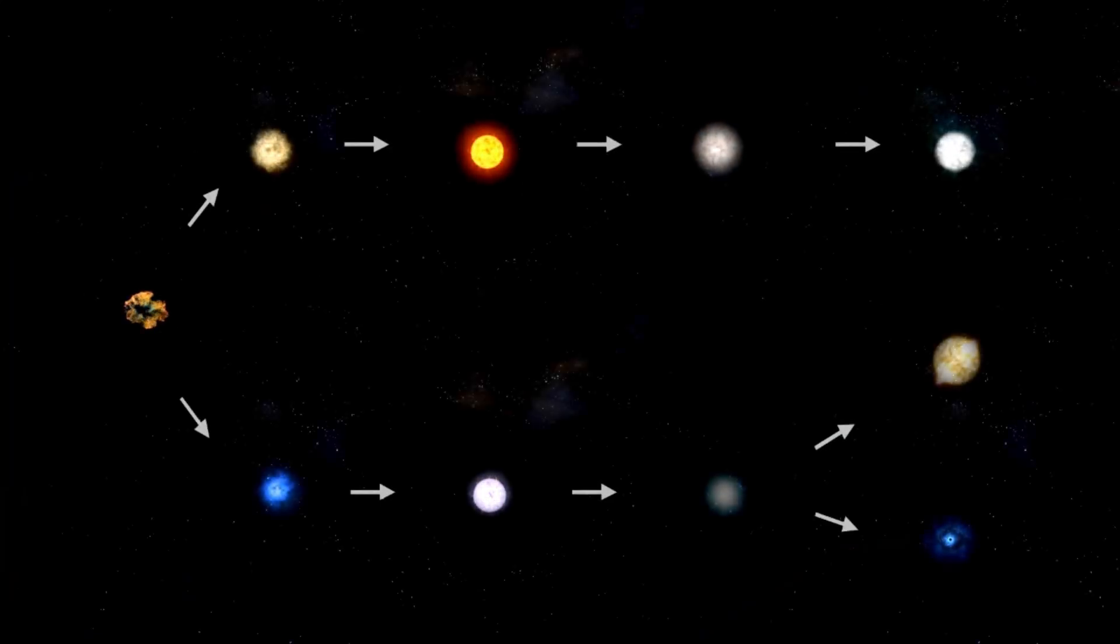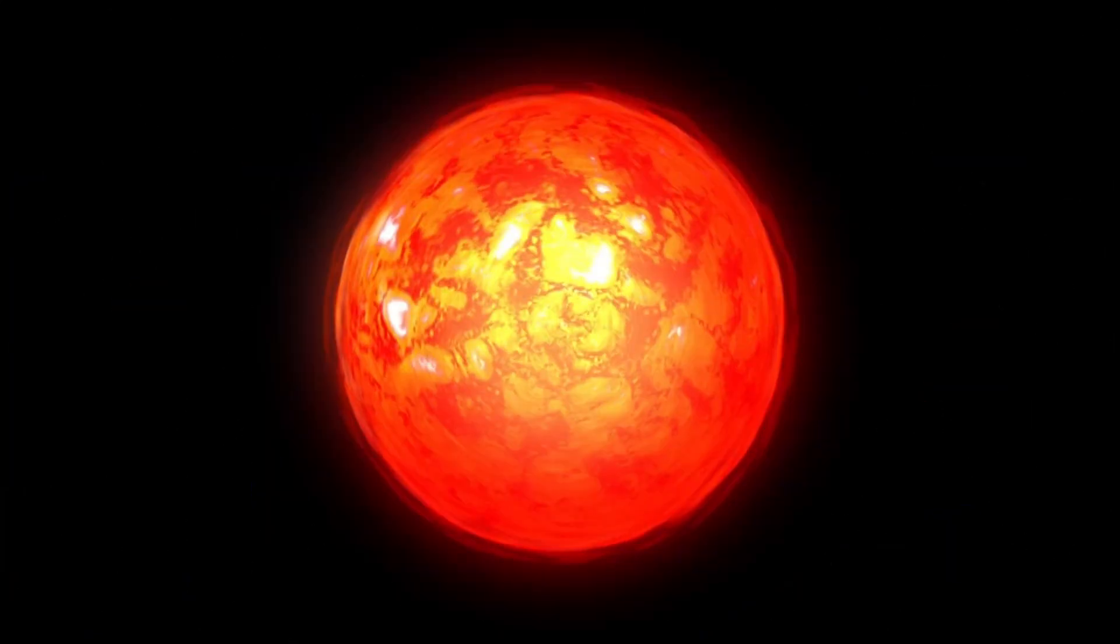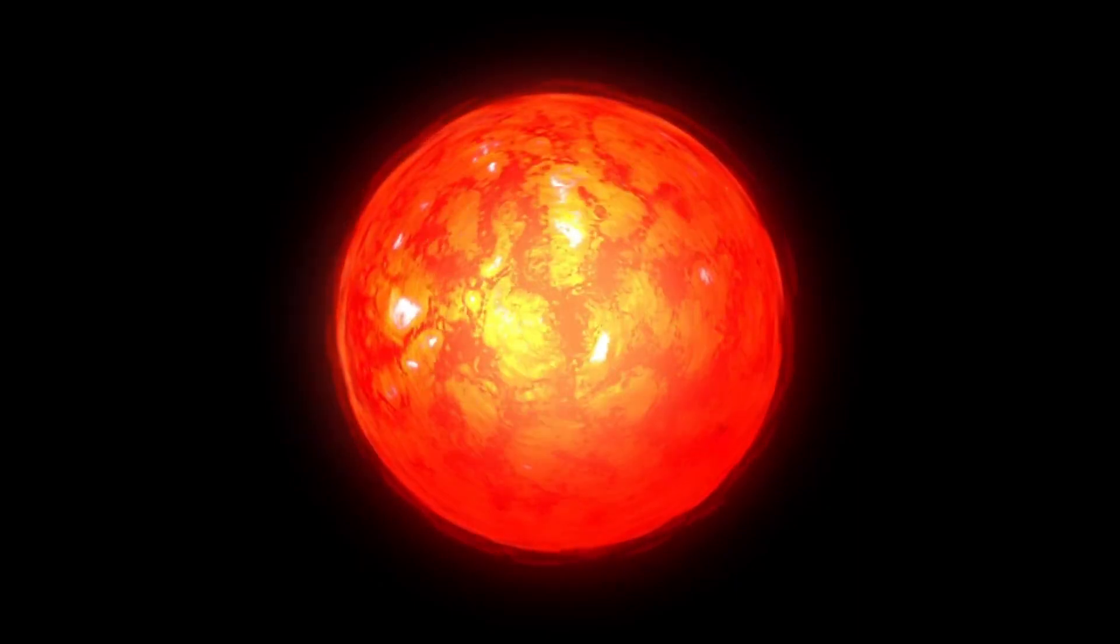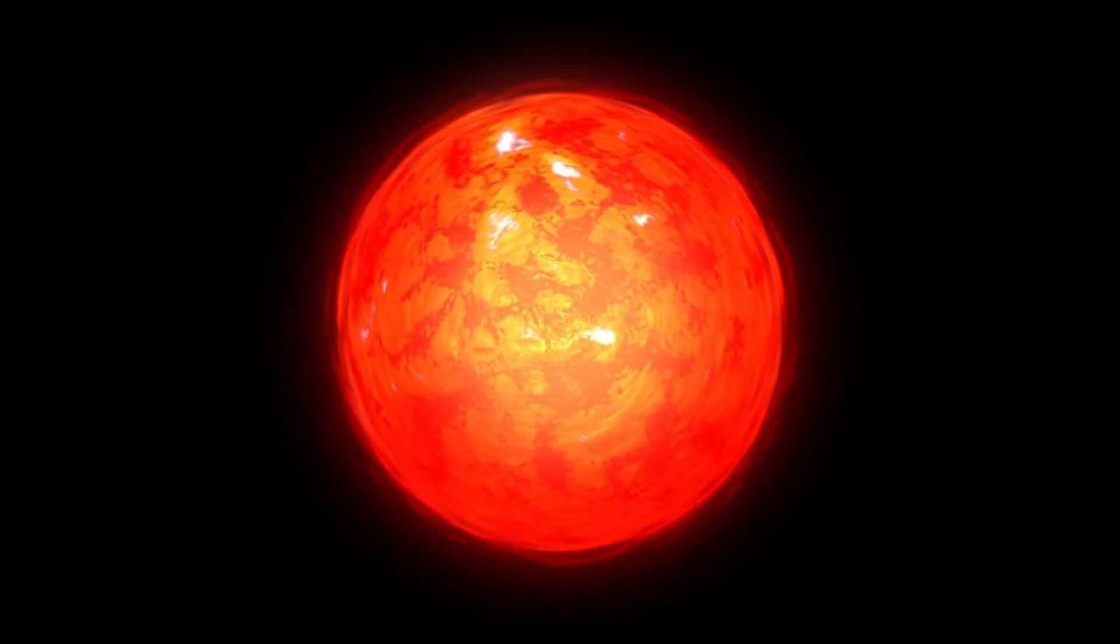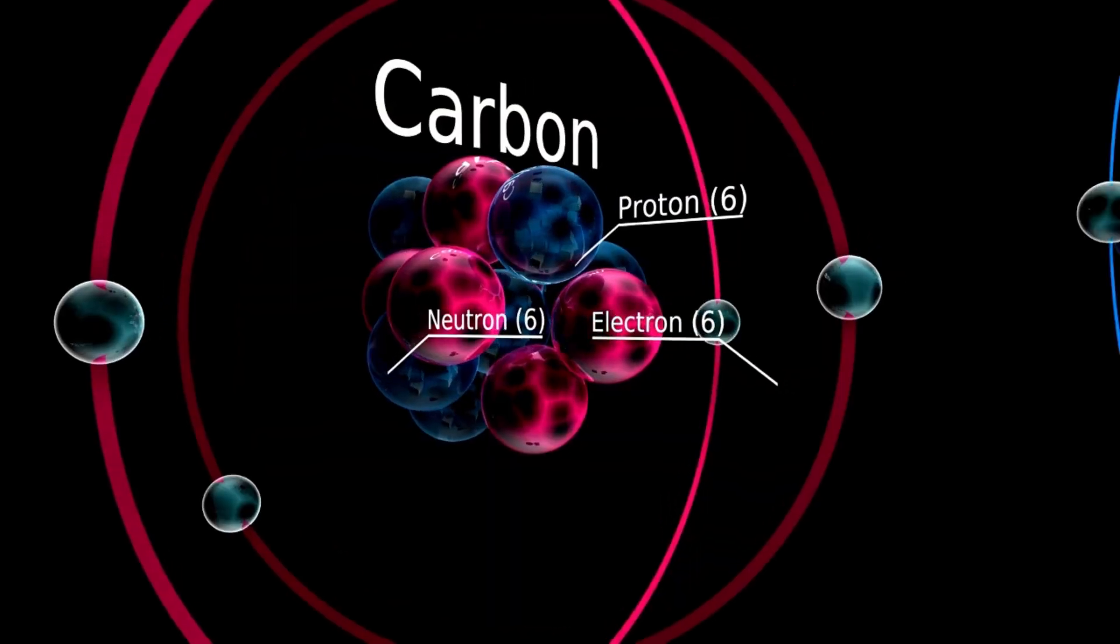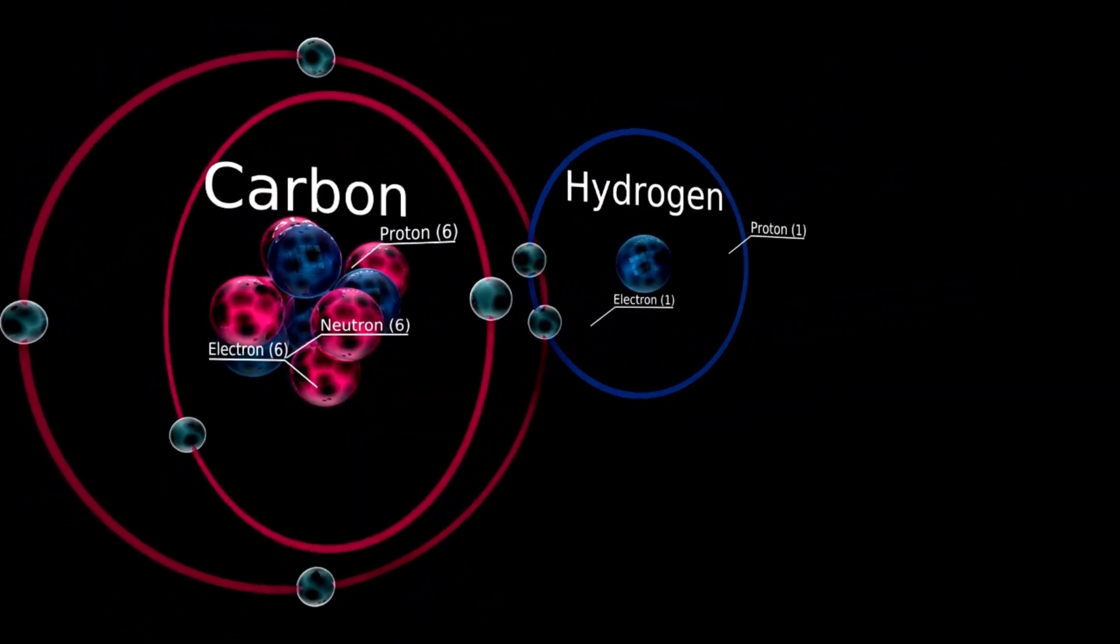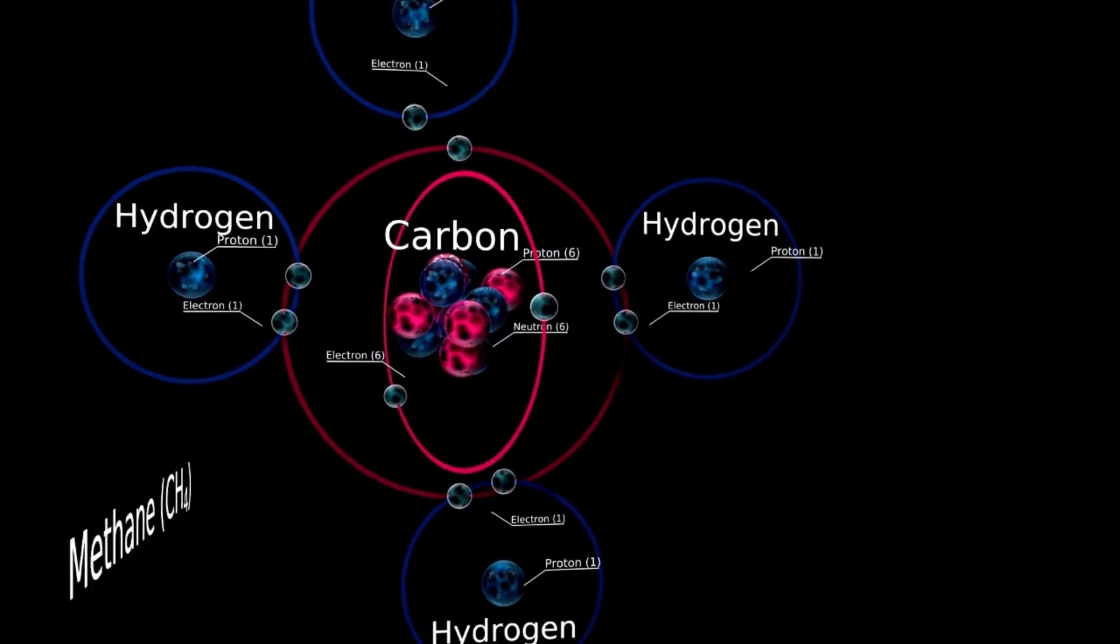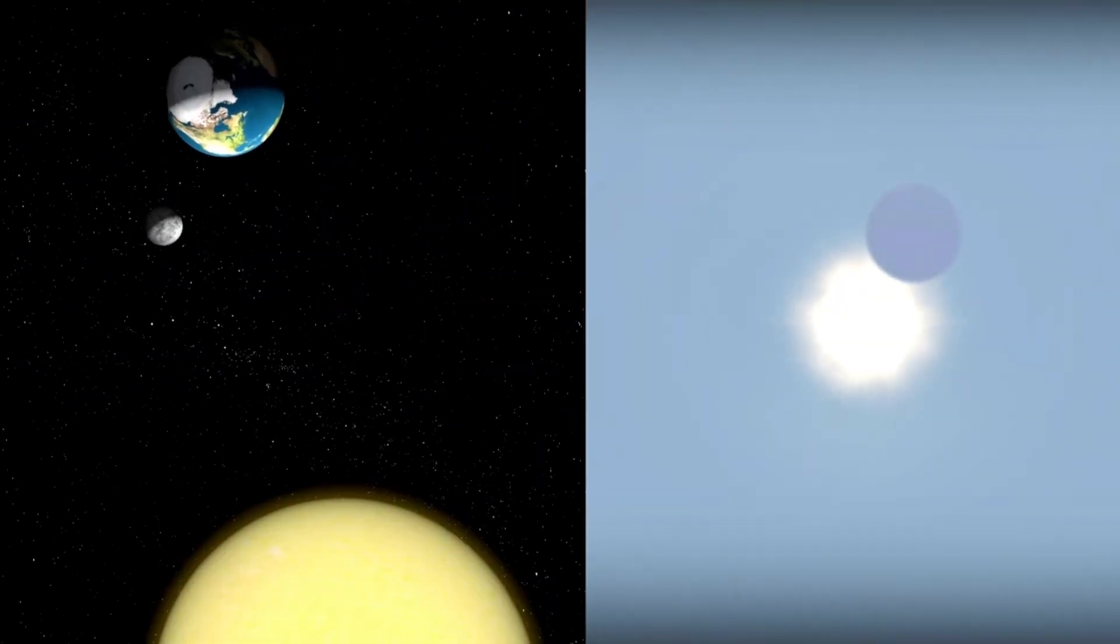Betelgeuse generally follows a 400-day cycle of brightness changes, along with a longer secondary cycle spanning about five years. This pattern was first documented in detail in 1836 by Sir John Herschel, though there are suggestions that it may have been noted even earlier through aboriginal oral traditions. Yet despite these predictable elements, the wonder of Betelgeuse lies not only in its color changes or its cycles of brightness but also in the